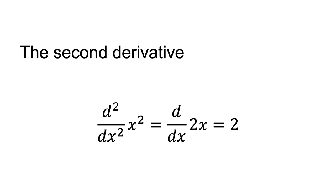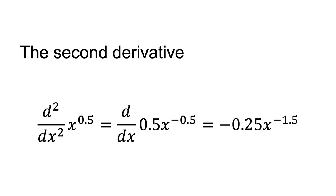The second derivative of x to the power of 0.5 is d squared/dx squared x to the power of 0.5, which equals d/dx 0.5 times x to the power of minus 0.5, which equals minus 0.25 times x to the power of minus 1.5. The second derivative is negative for all values of x for which x to the power of 0.5 is defined. This implies that x to the power of 0.5 is increasing at a decreasing rate. The function is concave.